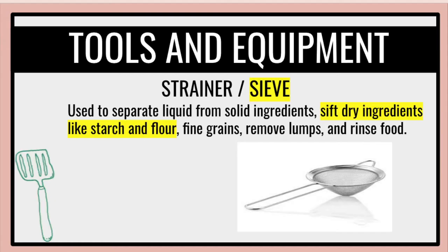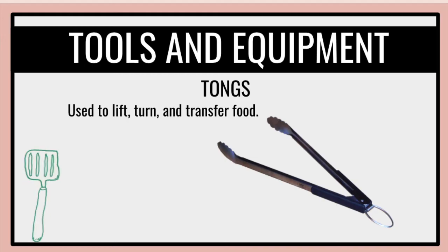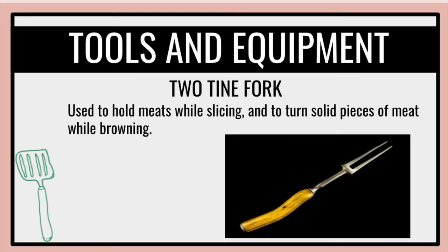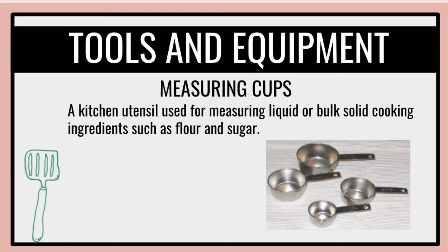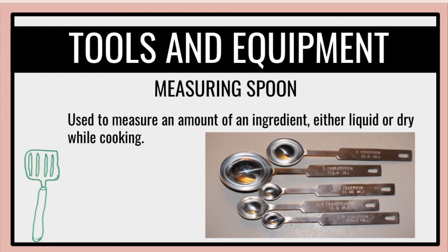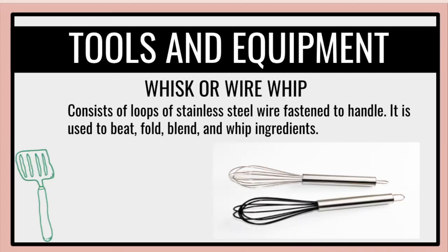For sharp-edged utensils, use them slowly until you get the hang of it. We have tongs, which are used to lift, turn, and transfer foods. The two-tine fork is used to hold meat while slicing and to turn solid pieces of meat while browning. For measuring cups, it's a kitchen utensil used for measuring liquid or bulk solid cooking ingredients such as flour and sugar. Measuring spoon is used to measure an amount of an ingredient, either liquid or dry, while cooking. A whisk or wire whip consists of loops of stainless steel wire fastened to a handle; it is used to beat, fold, blend, and whip ingredients.